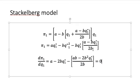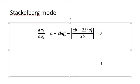I can multiply both sides by 2B to eliminate this fraction. So this becomes 2AB minus 4B squared Q1 star minus AB plus 2B squared Q1 star, that's equal to 0.